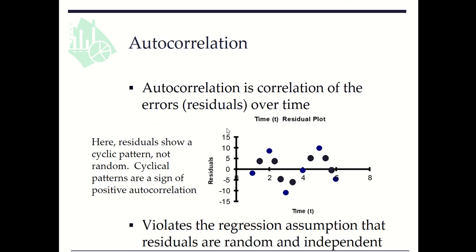Autocorrelation is correlation of the errors or residuals over time. Here, residuals show a cyclical pattern, not random. Cyclical patterns are a sign of positive autocorrelation. Such a pattern violates the regression assumption that residuals are random and independent.